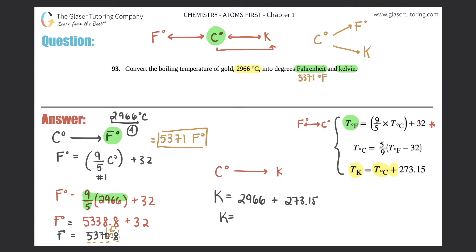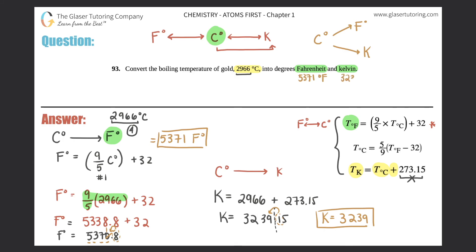Kelvin = 2966 + 273.15. However, 273.15 is a standard constant, so it doesn't count for sig figs. In the Celsius number there are no digits after the decimal, so there should be nothing after the decimal in the answer. The digit after the cut is a 1, which rounds the 9 to stay the same. So Kelvin = 3239 K. Box that answer.